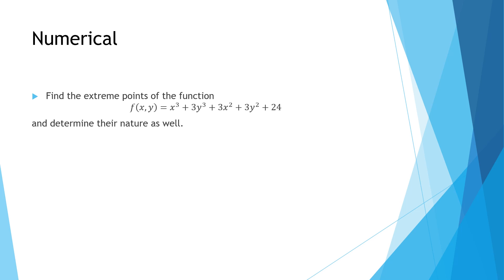Now we can solve a problem. Find the extreme points of the function f(x, y) = x³ + 3y³ + 3x² + 3y² + 24, and determine the nature of the points — whether it is a maximum, minimum, or saddle point. A saddle point is the inflection point at which it is neither maximum nor minimum. To solve this, we follow the same procedure: start with the necessary condition, then go to the sufficient conditions.